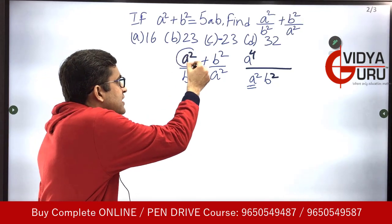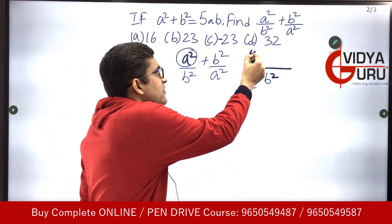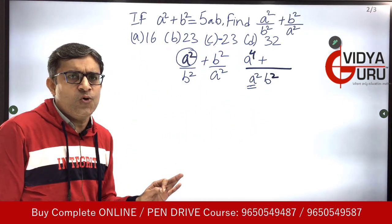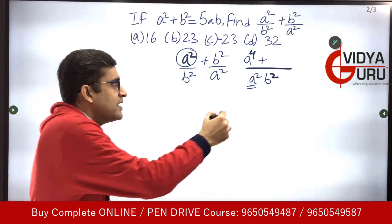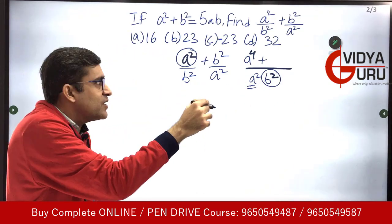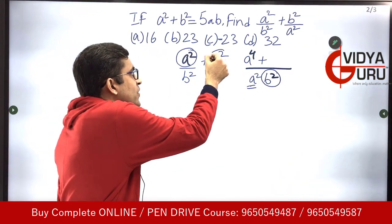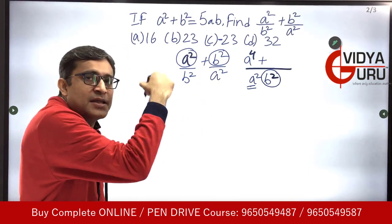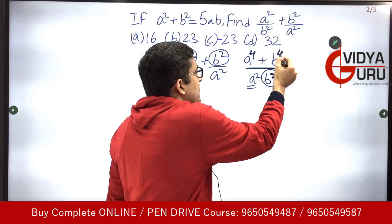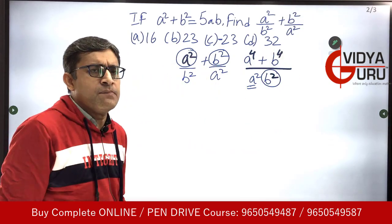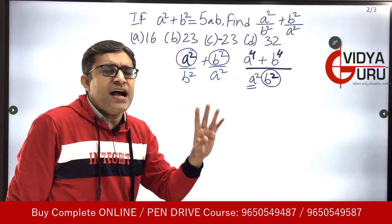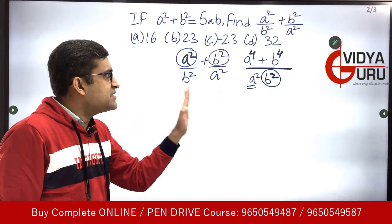Similarly, the b² in the denominator will get multiplied with the b² in the numerator, and the powers will get added to give b raised to power 4. So I've simply taken the LCM and added these two fractions, giving us a⁴ + b⁴ in the numerator.